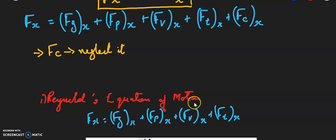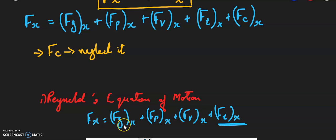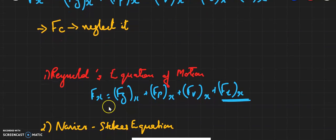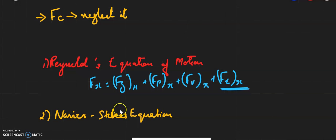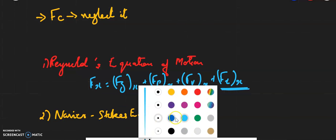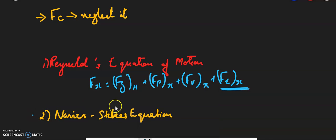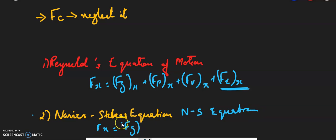If the force due to turbulence is also negligible, the net force reduces to: Fx = Fg(x) + Fp(x) + Fv(x). This equation is known as the Navier-Stokes equation, sometimes written as the N-S equation.